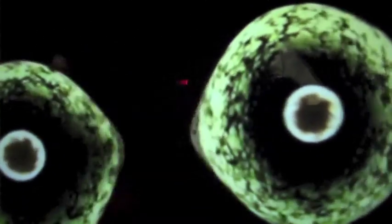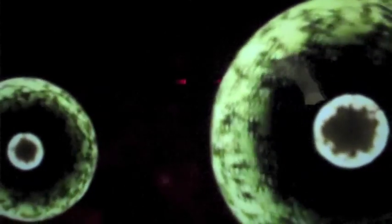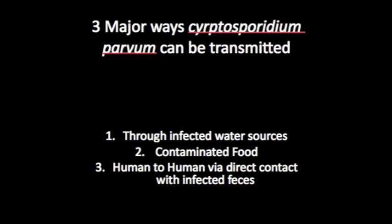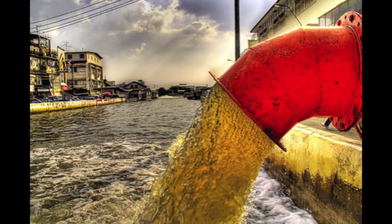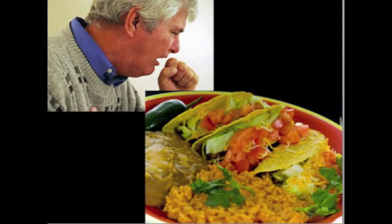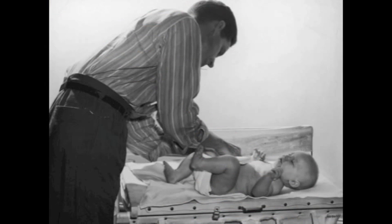The most common way Cryptosporidium parvum is transmitted is through direct contact with animal or human feces. The parasite gets into the body and replicates, and once it enters back into the environment, it is able to survive outside a host cell for a long time, waiting for a new host to pick it up. There are three main ways Cryptosporidium parvum can be transmitted: through infected water sources, through contaminated food, and through direct contact with infected feces.